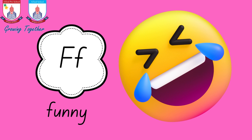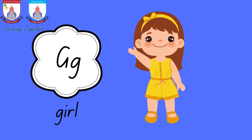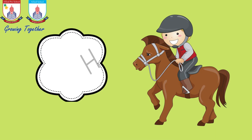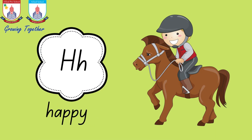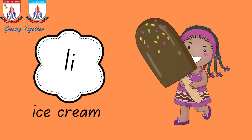G is for g-g-go, g-g-go. H is for ha-ha-happy, ha-ha-happy. I is for i-i-in, i-i-in.